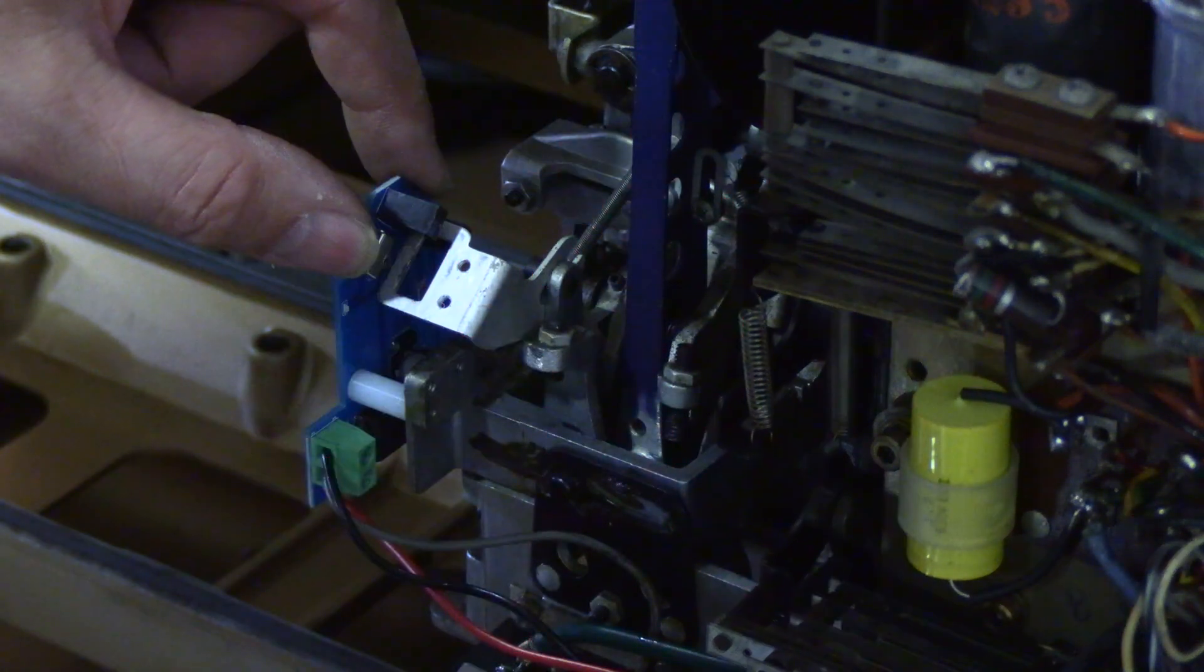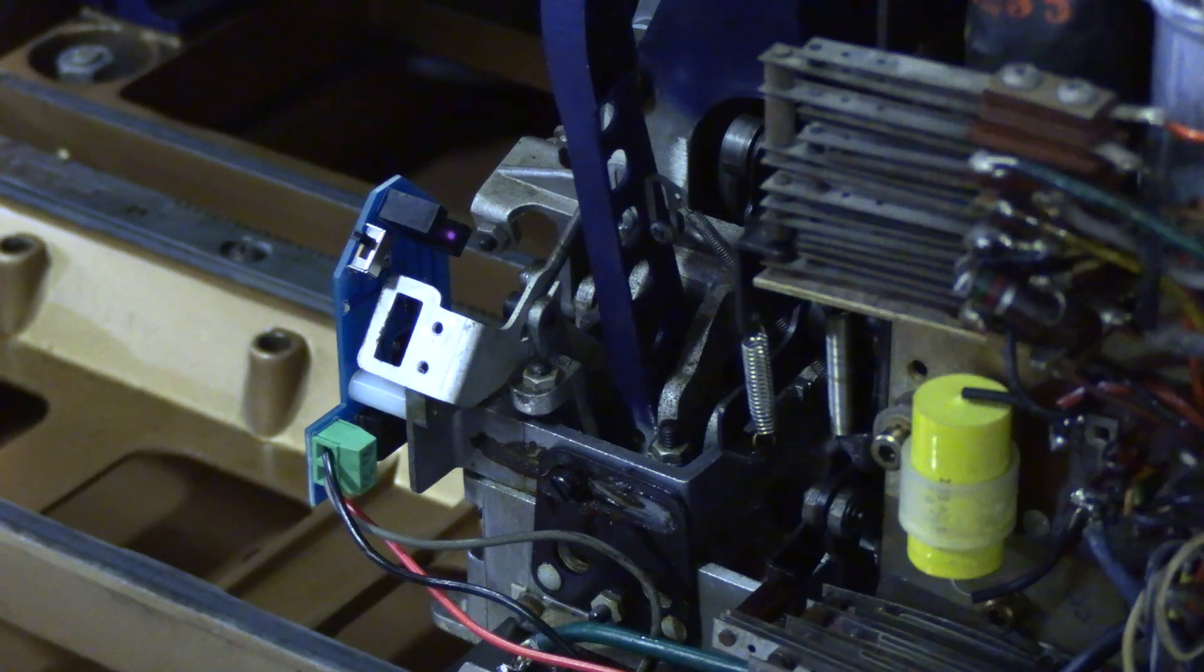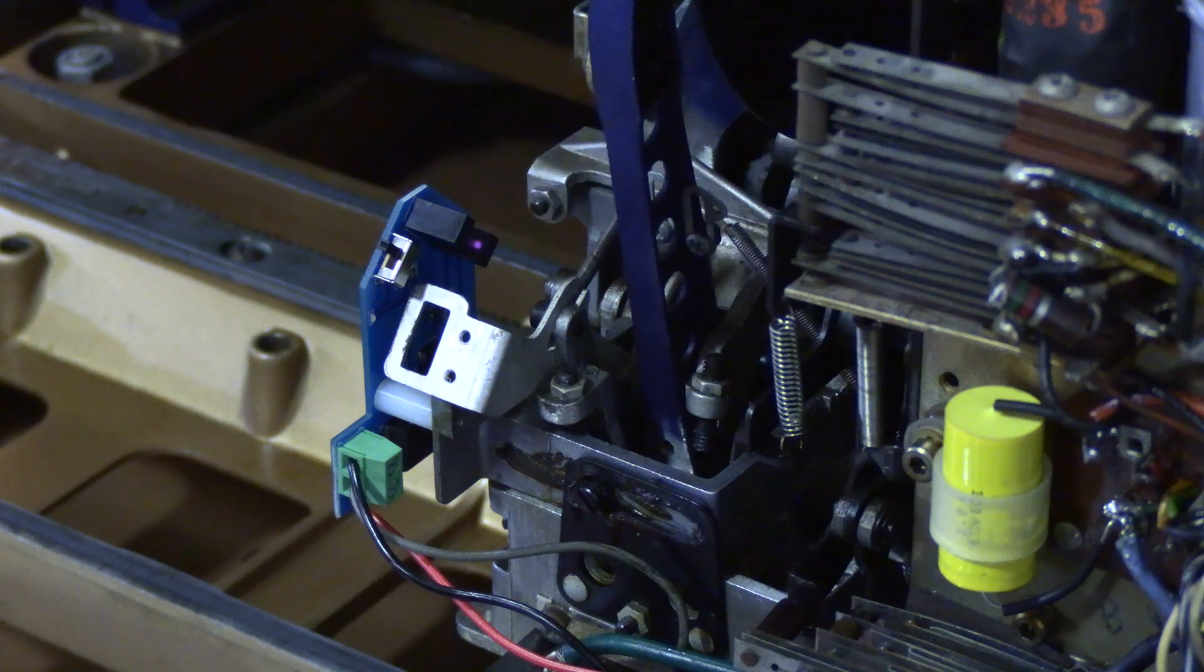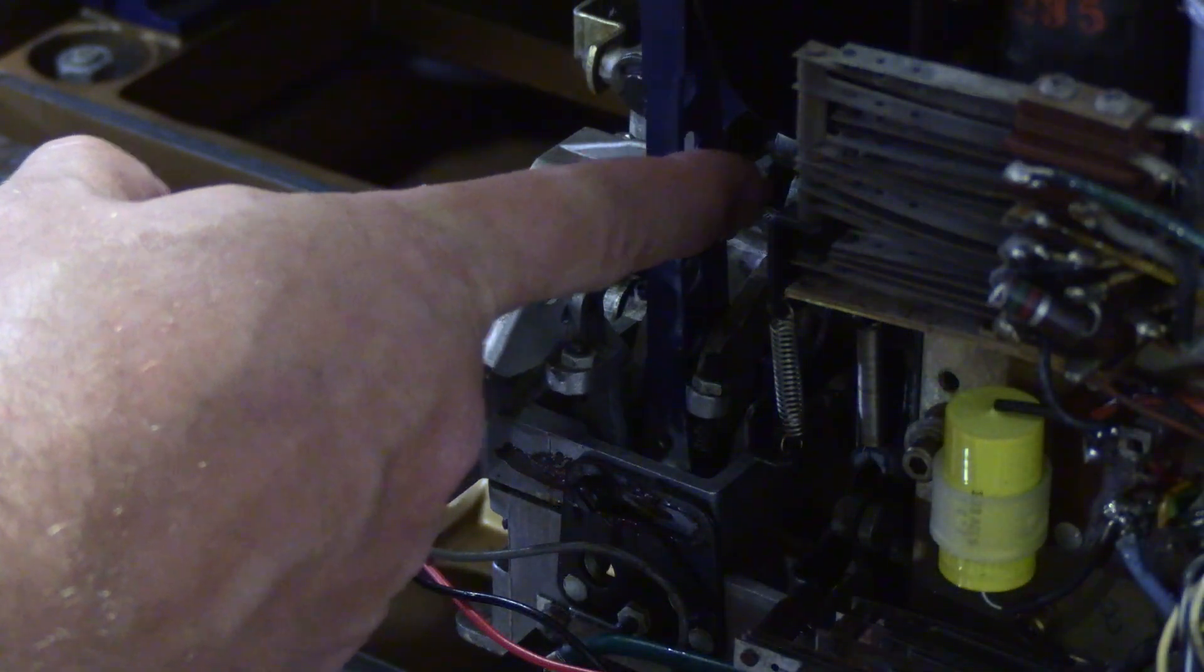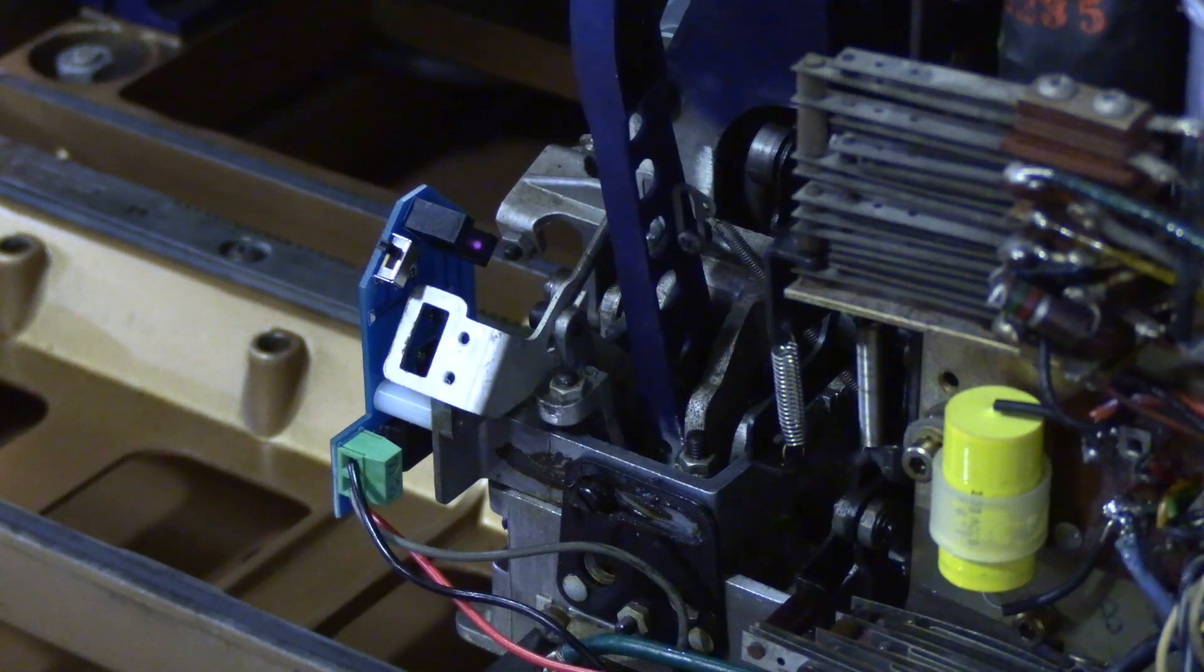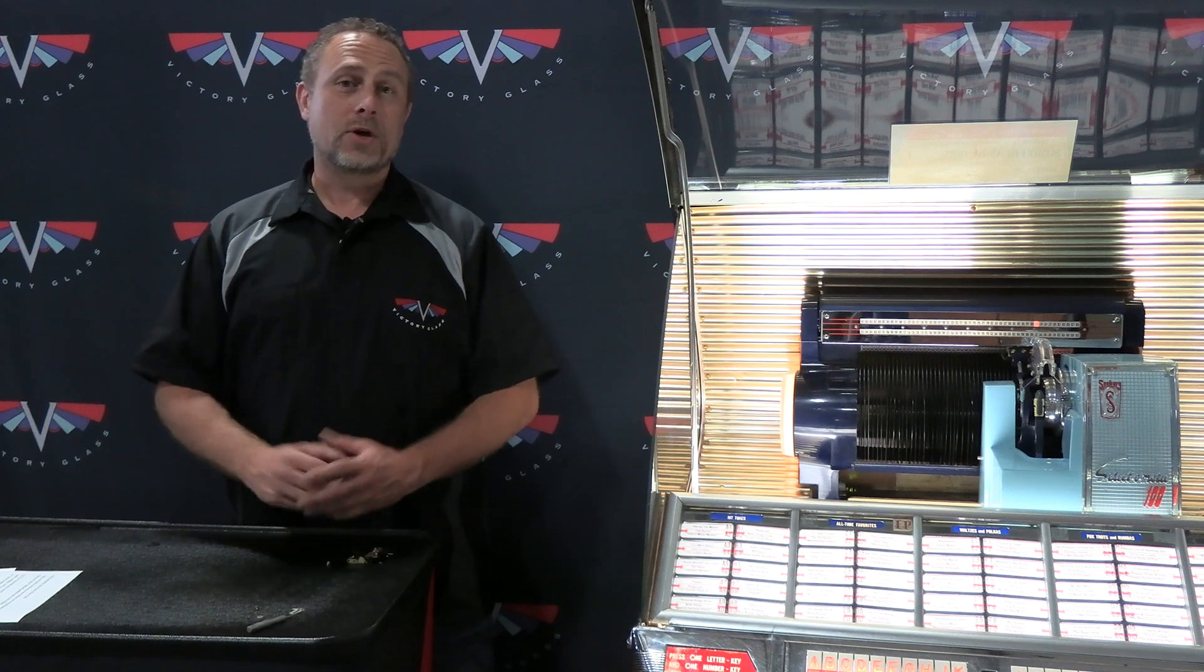Once you've got it set, flip the switch to run, and you're ready to go. So let's go ahead and try it. Let's hit J1, the next selection. There we are. We'll go to the end of the record. We're in the lead out groove, just like that. Perfect cancel every time. And that's all there is to it.